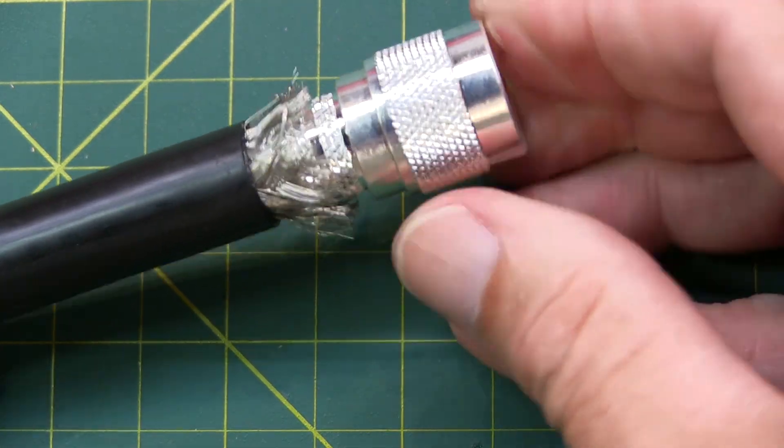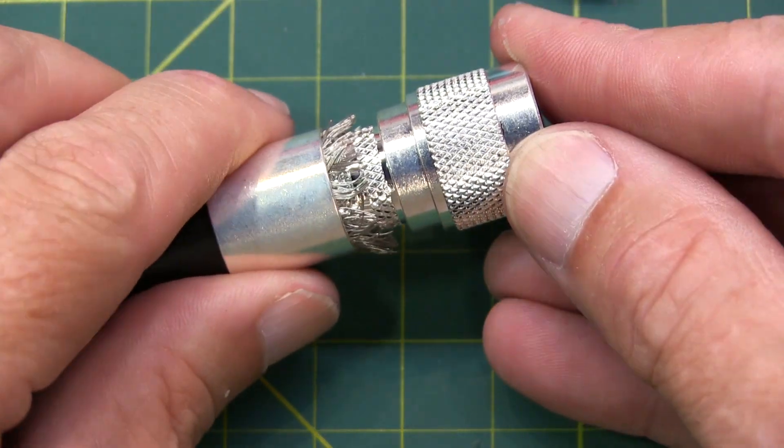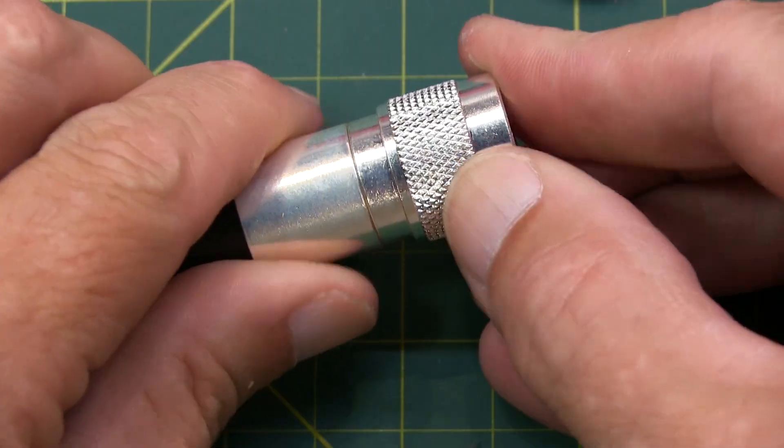And you can bottom it out as far as it will go. Next we slide the ferrule in place over the top of it.